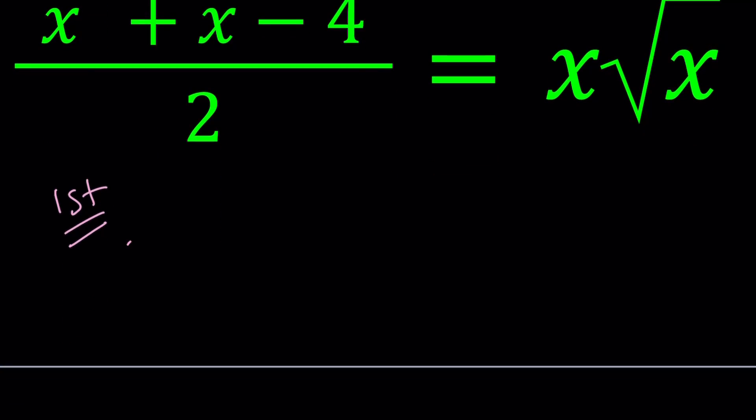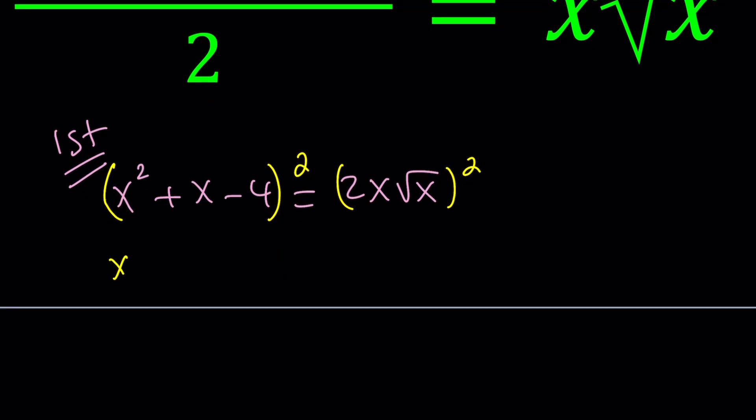First, I'm going to cross multiply. And then since the radical is on one side, I'm going to go ahead and square both sides. That's going to give me x to the 4th plus x squared plus 16 plus 2x cubed minus 8x squared minus 8x. If you use the formula for a trinomial squared, and then this will be 4 times x squared times x, which is 4x cubed.